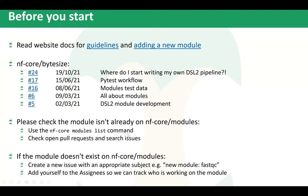The first thing to do if you want to contribute to NFCore modules is to make sure the module isn't already there. We've got a command called 'nfcore modules list', which is part of the NFCore tools package — it tells you all the modules installed in NFCore modules. You can also go directly to the GitHub repo. You should also check open pull requests and search issues on NFCore modules to see whether someone is already working on that module, to avoid clashing in development and duplicating contributions.